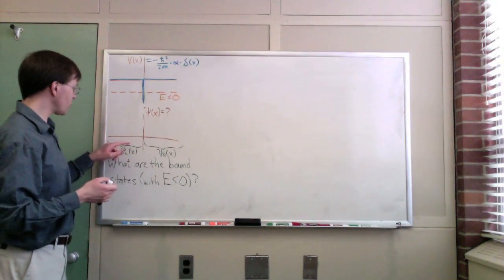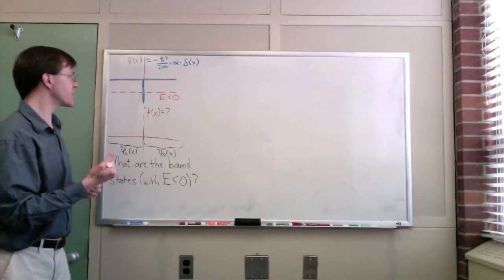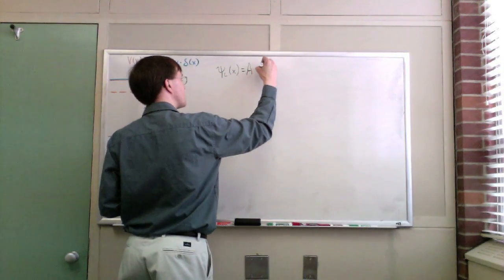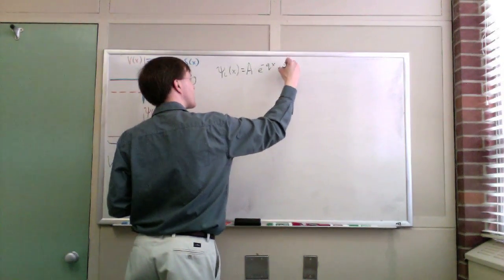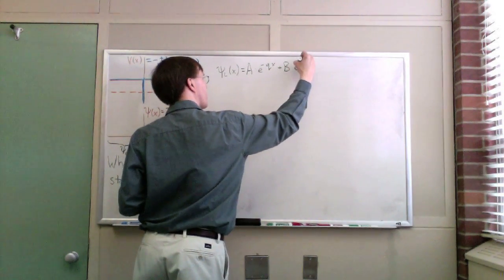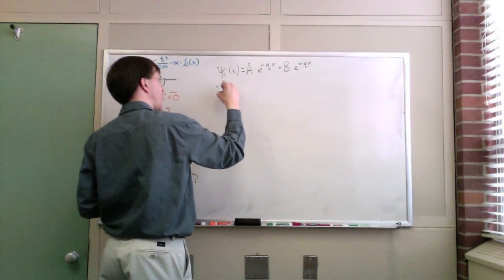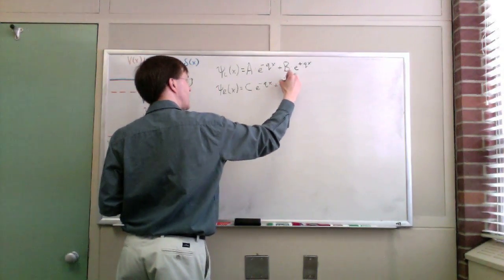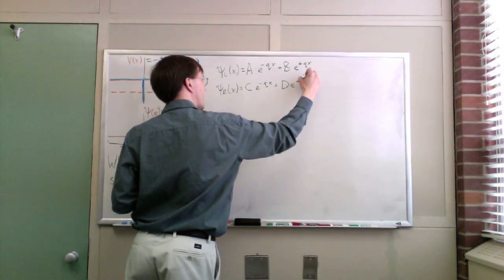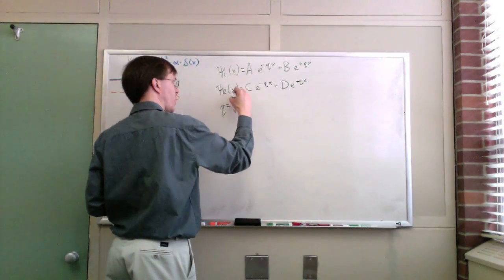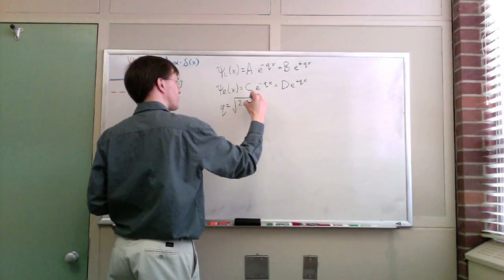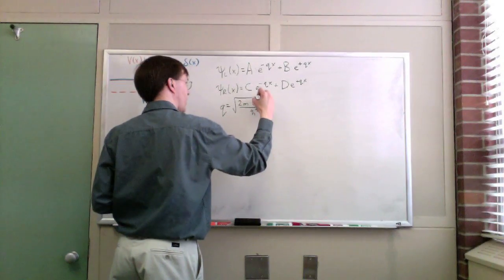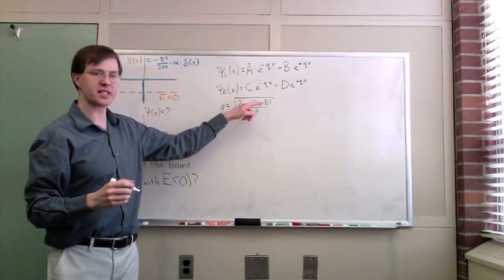Well, we know what those are. In each one of these regions, our energy is less than the potential energy. And so, psi left of x we could write, in general, as some constant a times e to the minus qx plus some constant b times e to the plus qx. And similarly, psi right can be written as c e to the minus qx plus d e to the plus qx. Where in each one of these cases, q is equal to the square root of 2m times v-naught minus e over h-bar squared. That's our standard result for energy e less than v-naught.